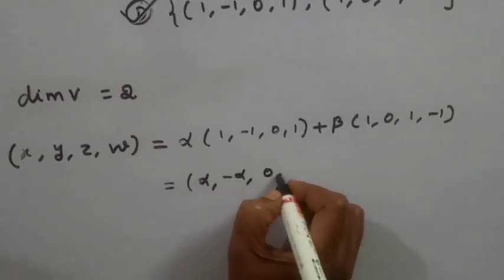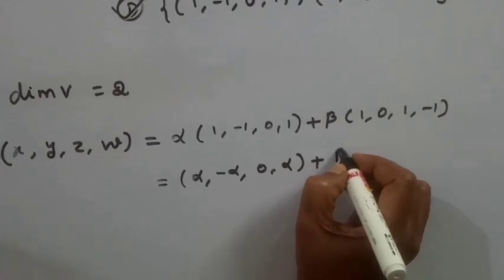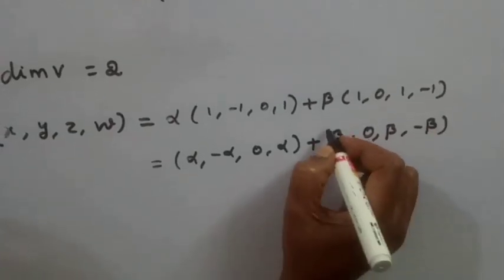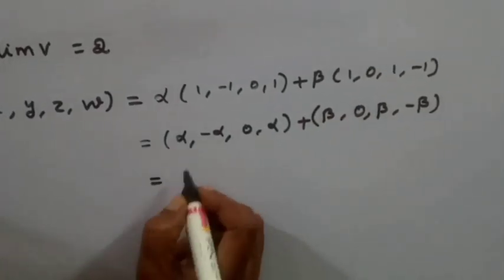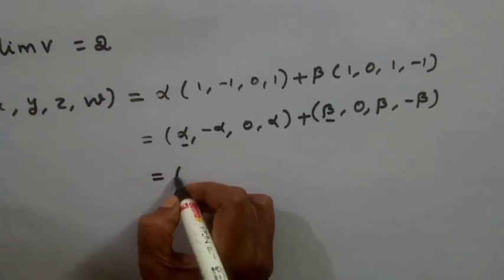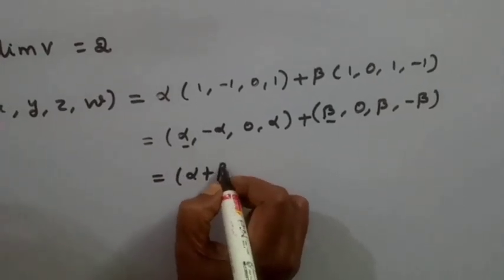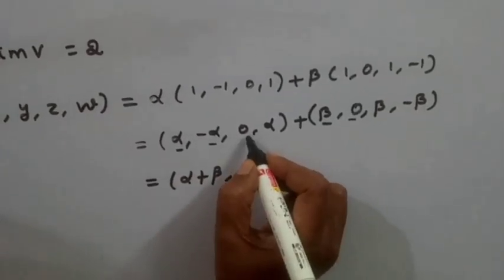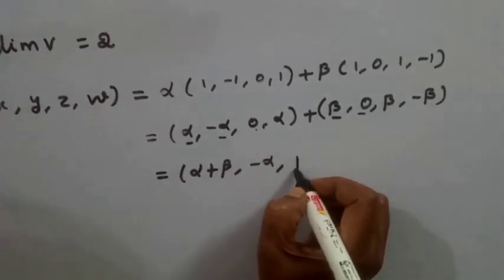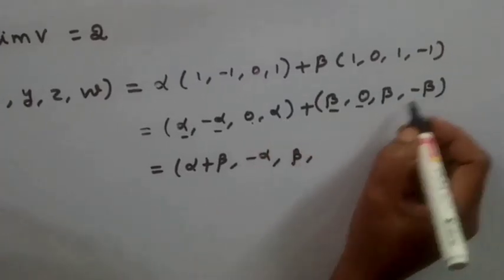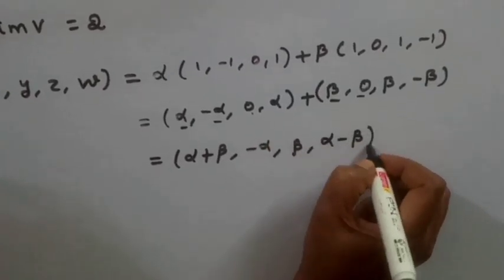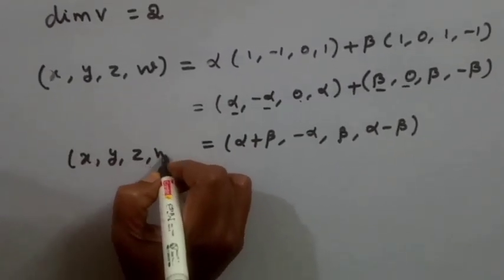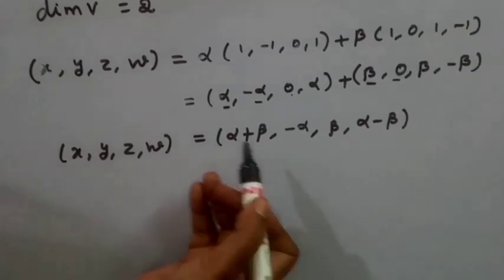Adding the two vectors component-wise: first coordinate = alpha + beta, second coordinate = -alpha, third coordinate = beta, fourth coordinate = alpha - beta. So our general vector is (alpha+beta, -alpha, beta, alpha-beta), giving us x = alpha+beta, y = -alpha, z = beta, w = alpha-beta.